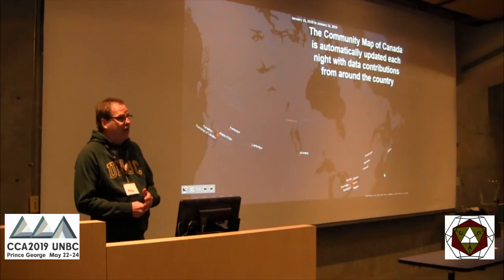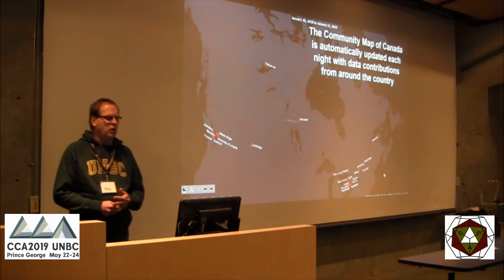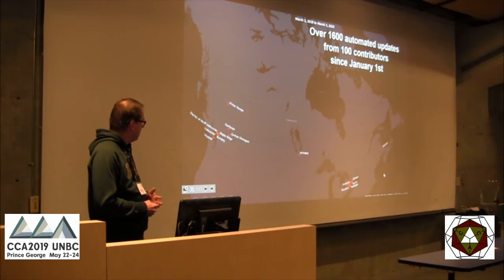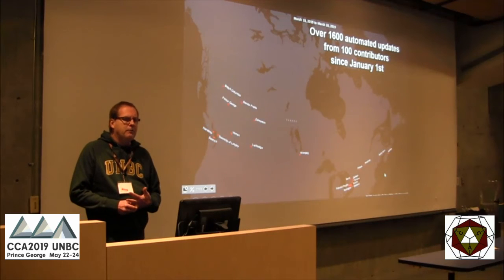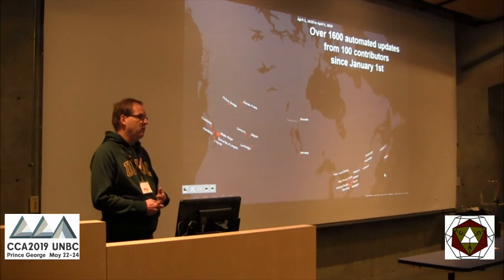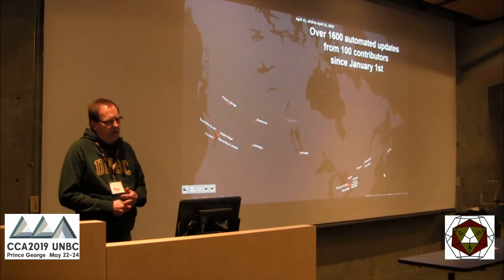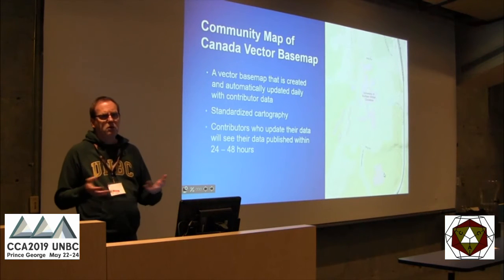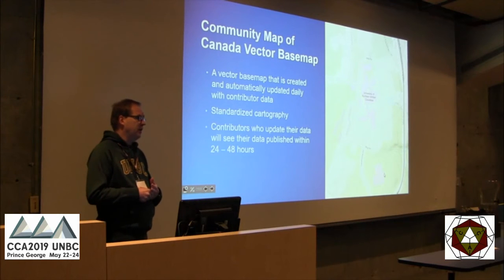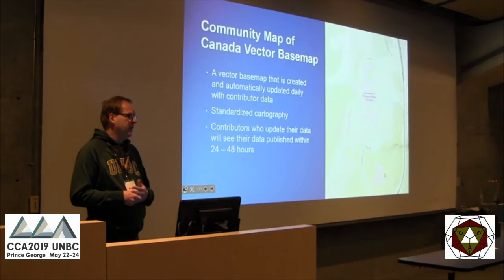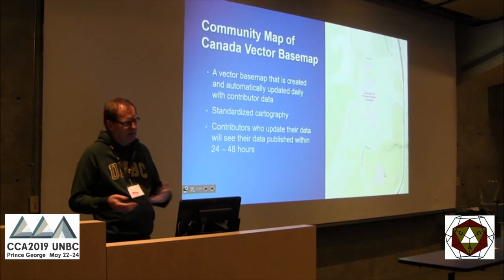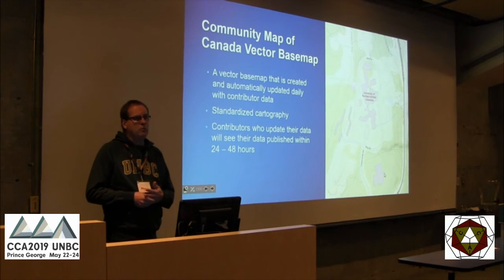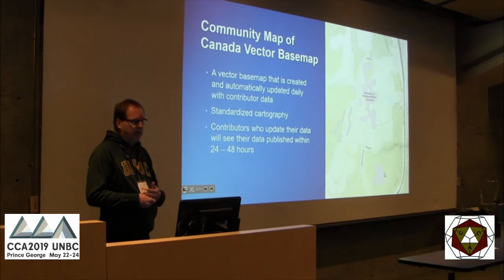This animated map shows the first four months of this year where we've gotten updates from various communities all across the country — provincial, municipal, and federal governments. We've had over 1,600 automated updates from over 100 communities since January 1st, and we're working on hooking up to at least another 100. Updates can range from a single road name change to a wholesale replacement of a data layer like updated buildings. We've got communities updating their content four or five times a week, and some updating maybe once every six months.